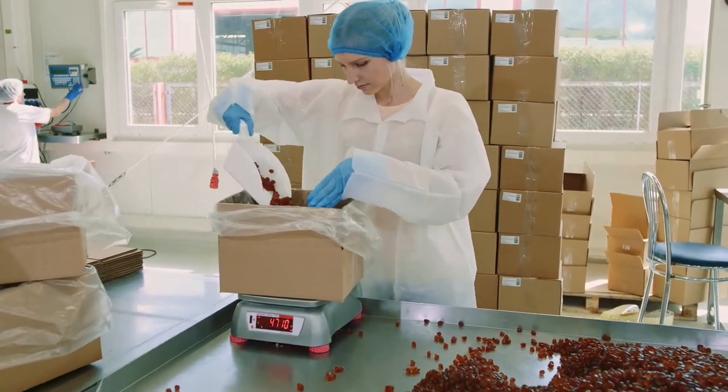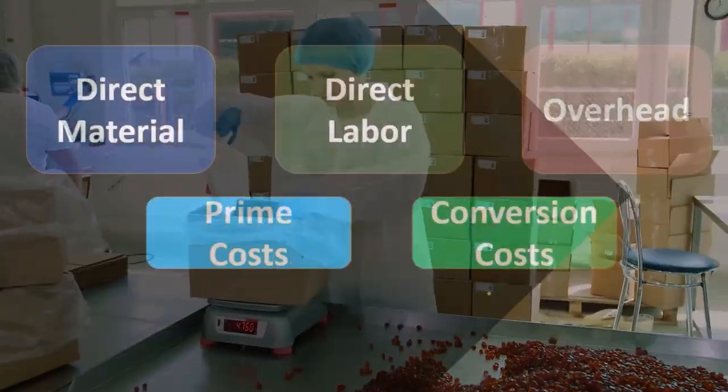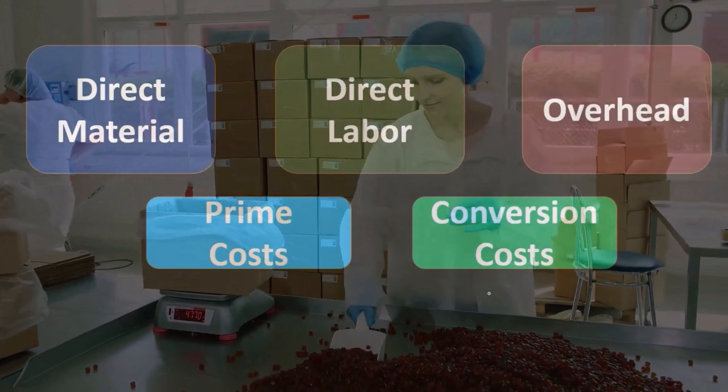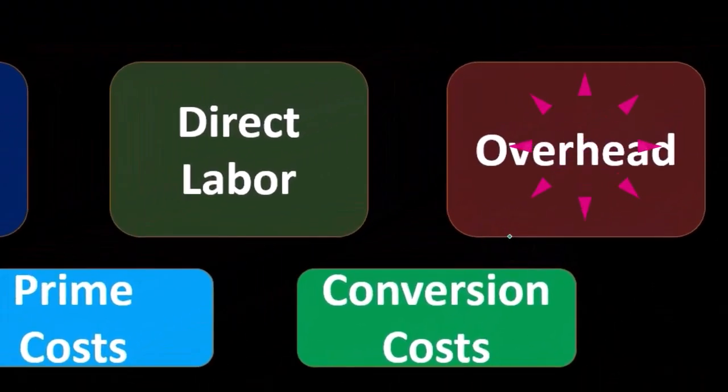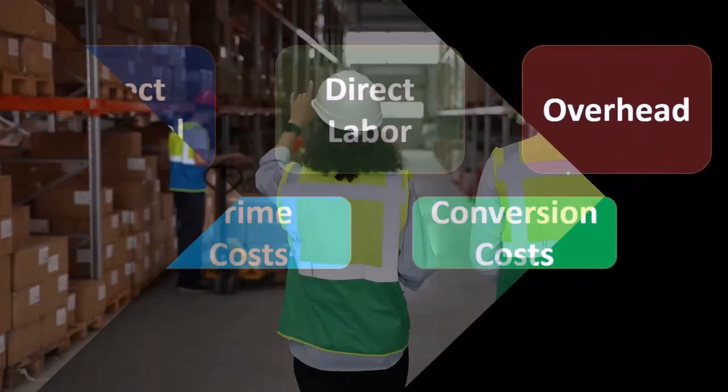The difference, of course, is that conversion costs are not at all the same as indirect costs. The indirect costs are just the overhead because we can't apply them. If you think of a job cost system, we can't apply them to the job. That's why they're indirect, that's why they're in overhead.